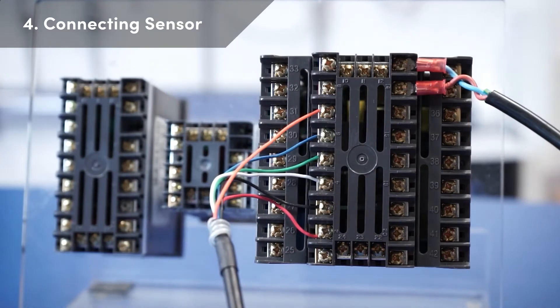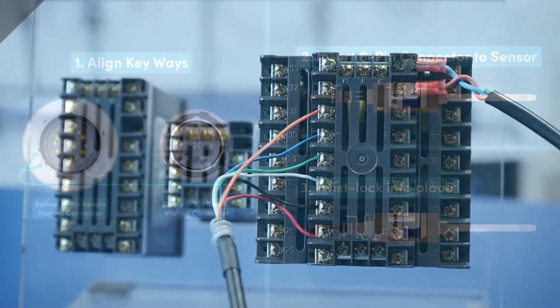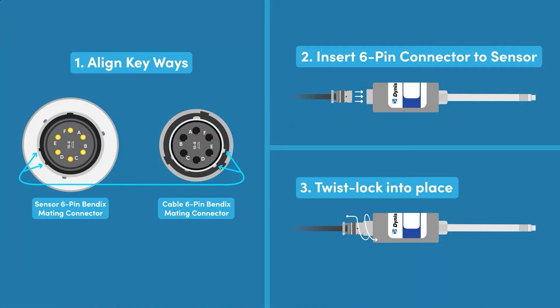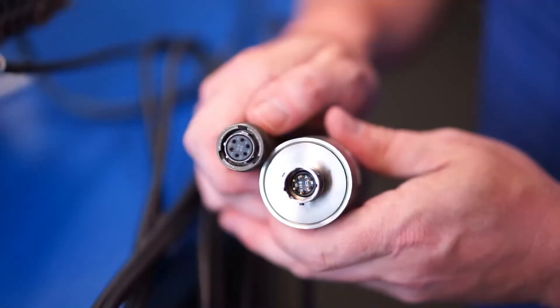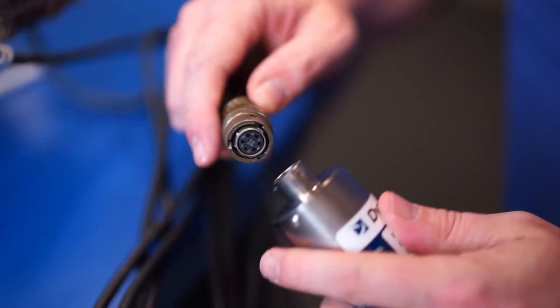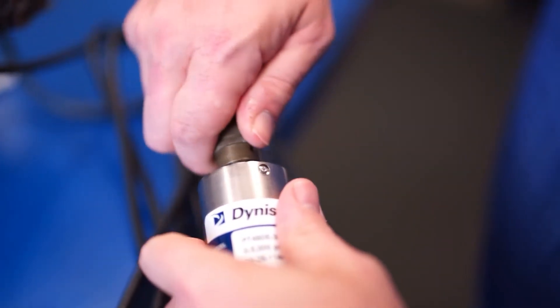Once the cable assembly has been secured to the screw terminals on the instrument, the technician will then connect the Bendix mating connector to the electronics of the pressure sensor. Fit the connector to the keyway to ensure proper pin alignment and then twist lock in place.